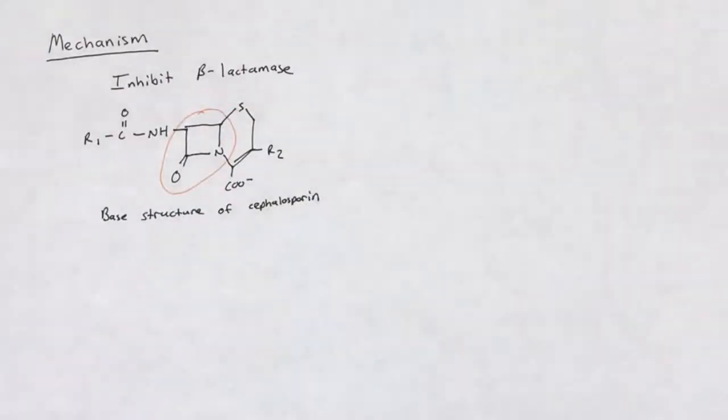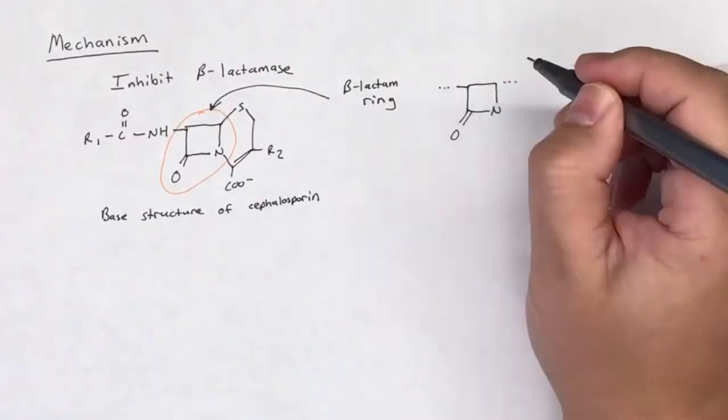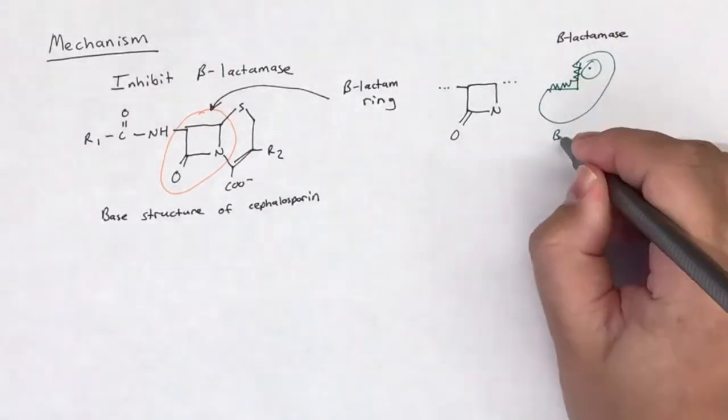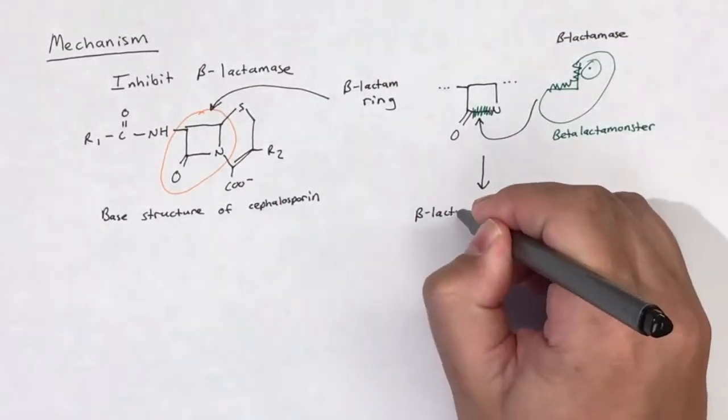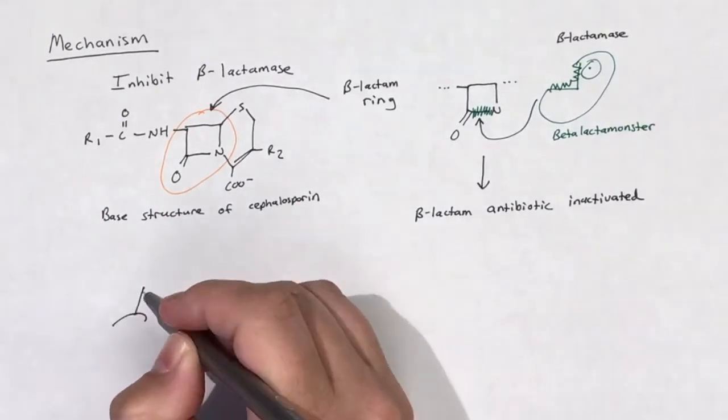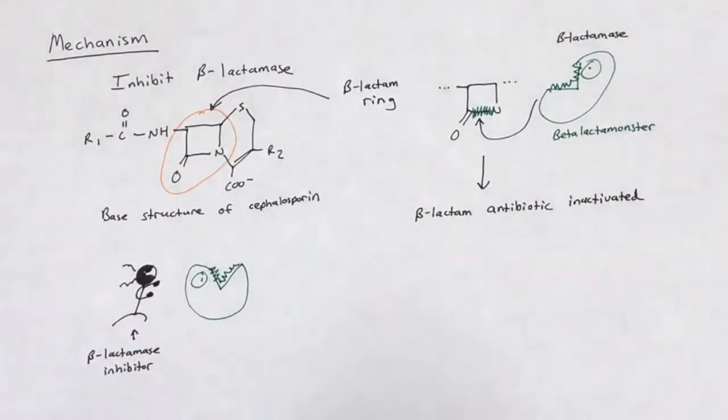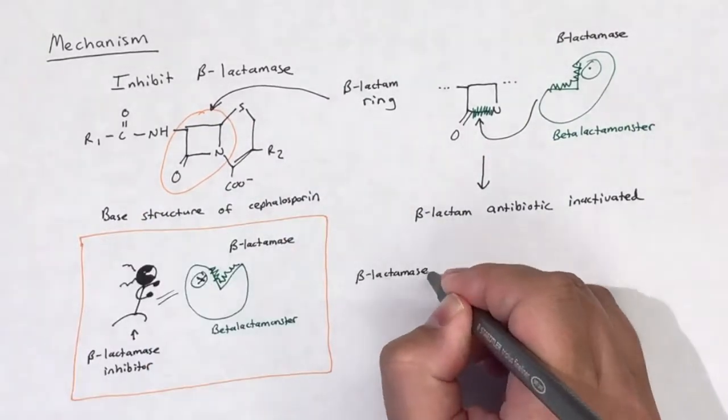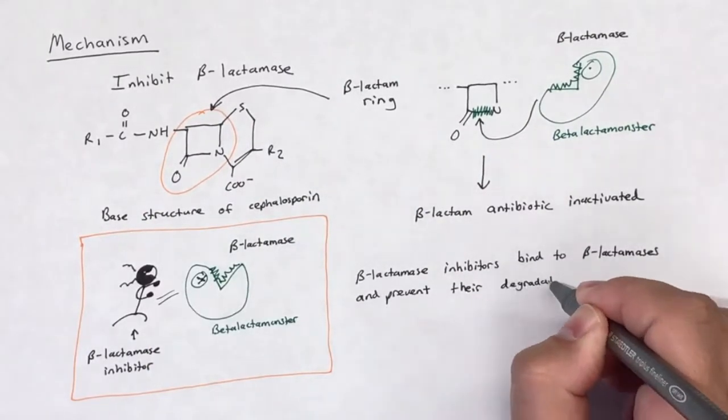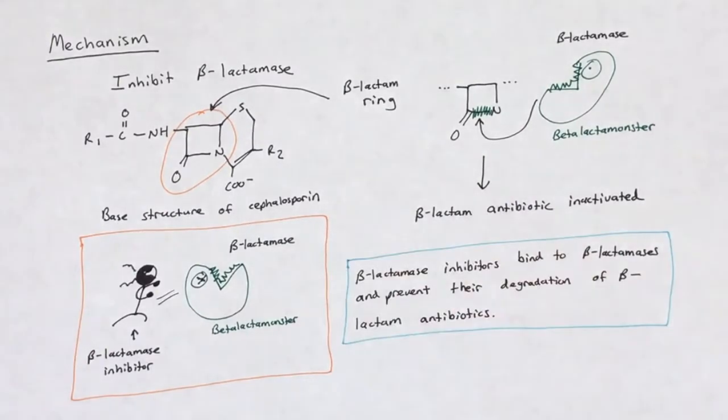This is an important mechanism because beta-lactam antibiotics, like the penicillins and cephalosporins, can be hydrolyzed and rendered inactive by beta-lactamases. Beta-lactamases break the beta-lactam ring, and without this ring, penicillins and cephalosporins are unable to bind to transpeptidase, and therefore these drugs are unable to inhibit cell wall synthesis.